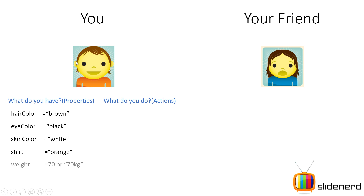By looking at this picture you can probably say: hair color is brown, eye color is black, skin color is white or tanned, shirt is orange, weight is something like 70 kgs. Now I'm talking about a real person. These are the properties I have considered. There may be a lot more properties but these are only a few that I've taken into account right now.